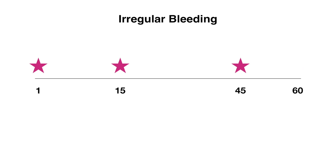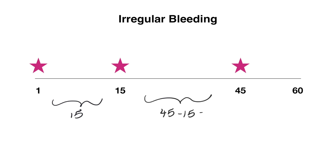In this diagram, a period occurs on day one, then day 15, then day 45. The first cycle length is 15 days, and the second is 45 minus 15, which is 30 days. Subtracting 30 and 15 gives a variation of 15 days, which is well above what we consider normal. This is what we refer to as irregular bleeding because the variation is well above what we would normally expect.